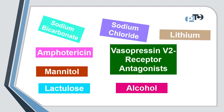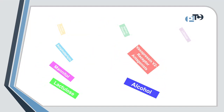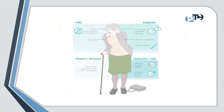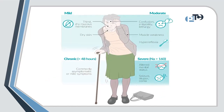The symptoms and complications of hypernatremia include thirst, weakness, confusion, seizures, and in severe cases, coma and death if left untreated. Identifying and treating the underlying causes is one of the management strategies for hypernatremia.